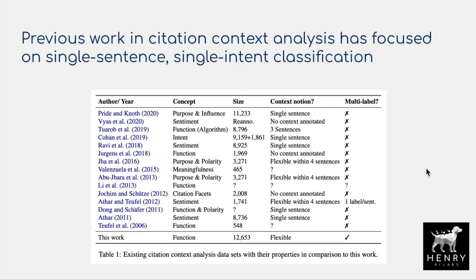Returning to citation context analysis — after looking at this table, we'll see examples of different citations and what we mean by the intent of these citations. Previous work has generally focused on single-sentence, single-intent classification. Here's a table of previous papers focused on this problem: what they're trying to do, the size of their dataset, and what context they use around the citation — just the cite sentence, or longer windows, which is what this paper explores. Generally these focused on single labels for citations, even though citations may have a more dynamic multi-label assignment.